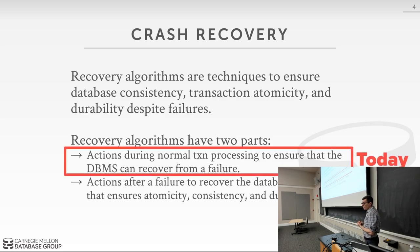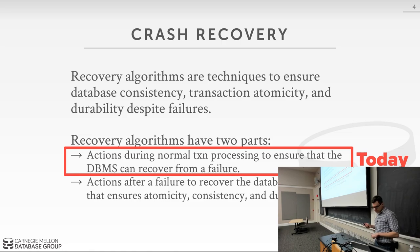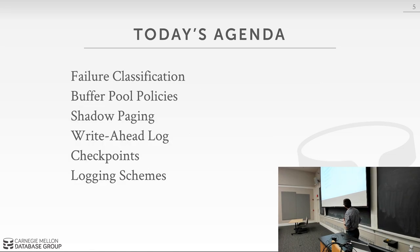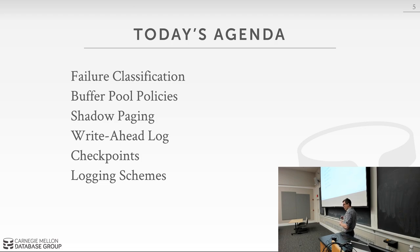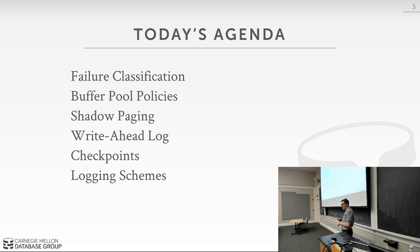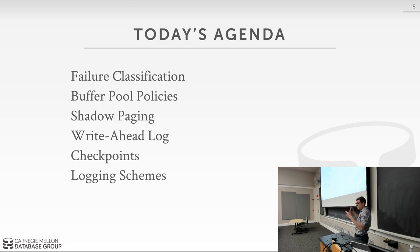For this lecture we're focused on the first part — the runtime things. Today we'll talk about what information you want to generate and write out to disk so that if there's a crash you can restore the database to the correct state. We'll start with different types of failures, then buffer pool manager policies, then two recovery techniques: shadow paging and write-ahead logging. Then we'll talk about logging schemes and finish with checkpoints, which will segue into Wednesday's class on actually restoring the database.